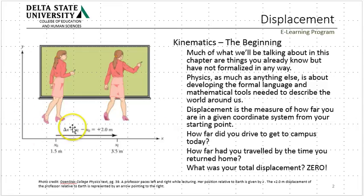Why? Because I walk back and forth and back and forth, ending up right back where I started. Any time you end up right back where you start, your total displacement is zero. Now, the distance you've walked in the meantime may be different. The distance you've walked and your displacement are not the same thing. Displacement is the distance between where you started to where you ended up.